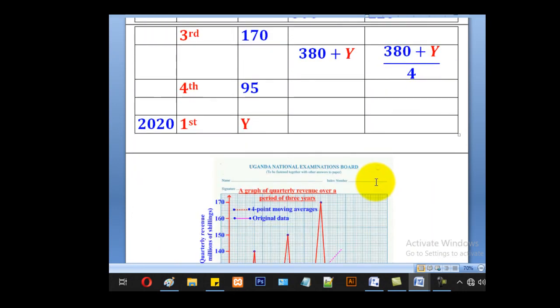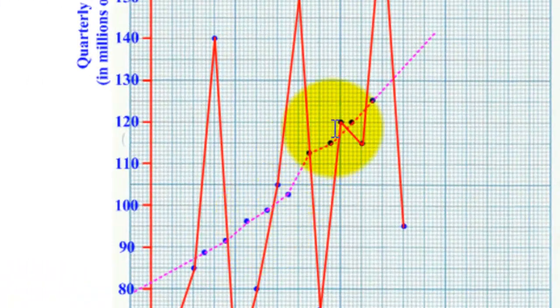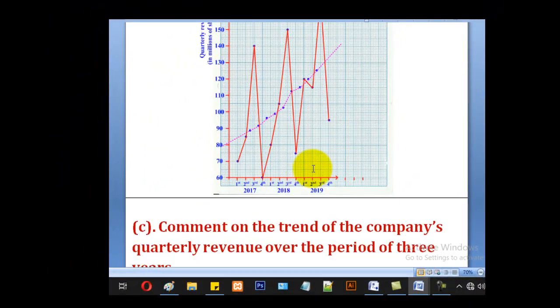Do the same for all these points. Those will be the points for moving averages. When you are done, you join using a ruler. Remember, they told us to estimate fourth of 2016. So you extrapolate these last two points with a straight line. Also these two points at the end also extrapolate. We shall see how it is used.